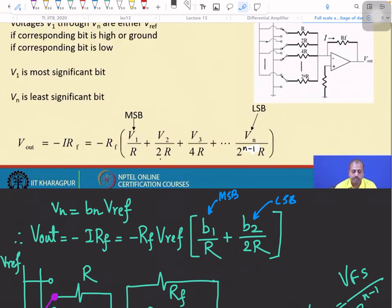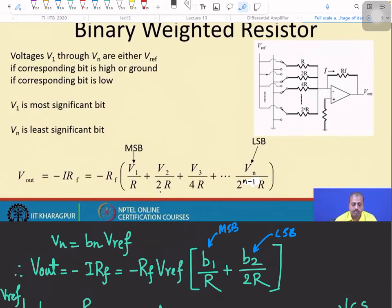So this V1, V2, V3 here—before that, note that this is the MSB and this is the LSB. In this case, because the value of R is small, maximum current flows. If this is activated, as the value of R is small, the maximum current will flow. So this is basically our MSB. This will produce the maximum output voltage in magnitude. So this is the MSB and this is the LSB.